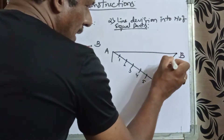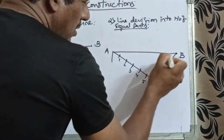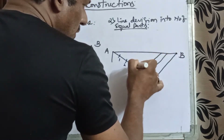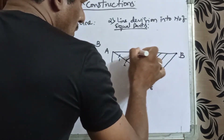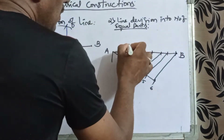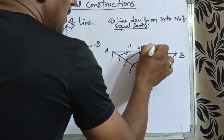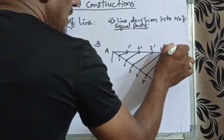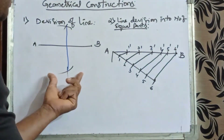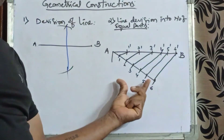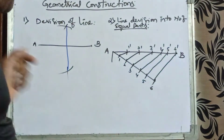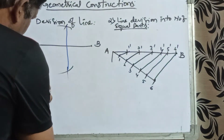Suppose you want six equal parts: take six equal points on the inclined line and join the sixth point to point B. Now draw lines from all intermediate points parallel to this line and extend them to the baseline. You will automatically get six equal parts: 1', 2', 3', 4', 5', and 6'. This way we can divide any unknown length line into any number of equal parts.